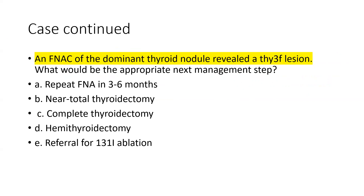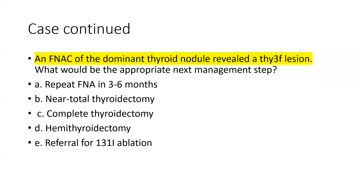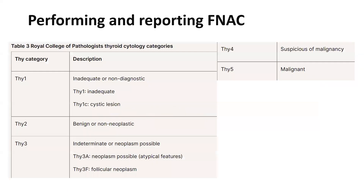FNAC of the dominant thyroid nodule on the right side was carried out and revealed a Thy3F result. What will be the most appropriate next step in management as per the NICE Guidelines? Should we repeat FNAC in three to six months, do a near total thyroidectomy, complete thyroidectomy, hemithyroidectomy, or refer for radioiodine ablation? If a Thy3F category is reported, which is suggestive of a follicular neoplasm, we should definitely consider diagnostic hemithyroidectomy — that is the correct answer.